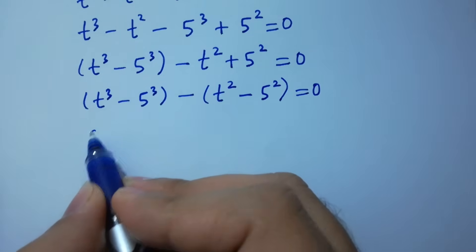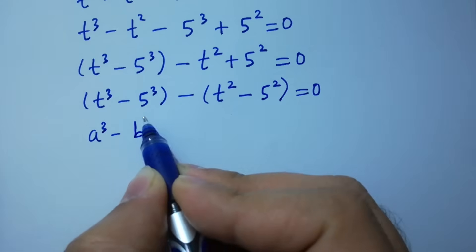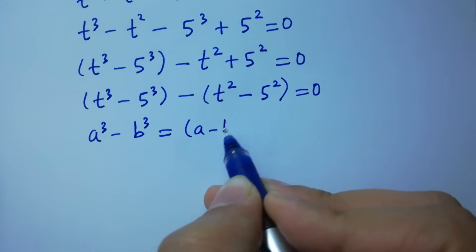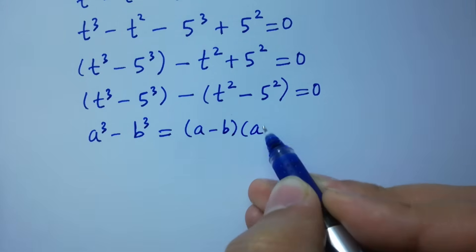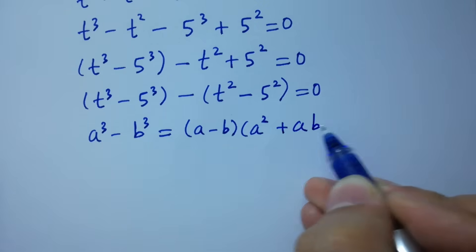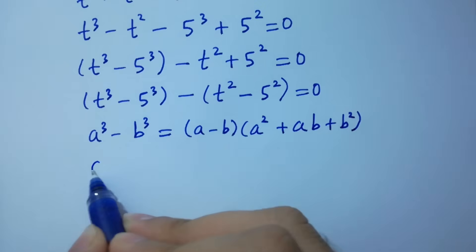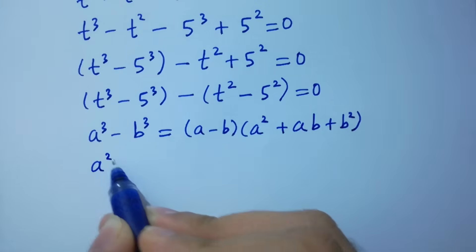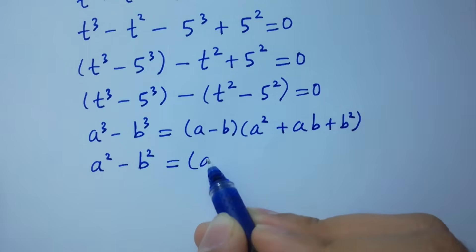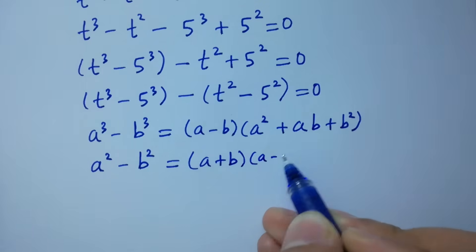As we know, a cubed minus b cubed equals a minus b times a squared plus ab plus b squared. And a squared minus b squared equals a plus b times a minus b.